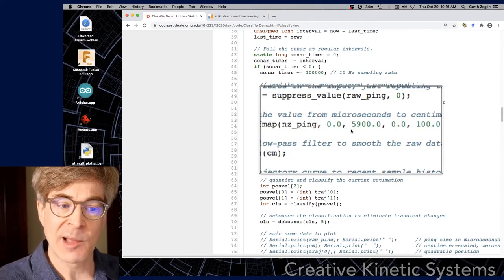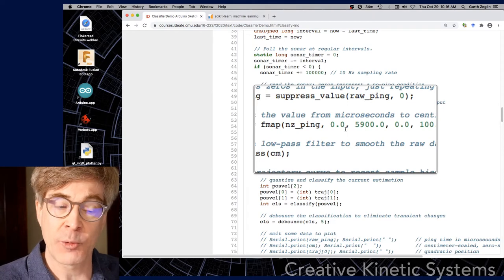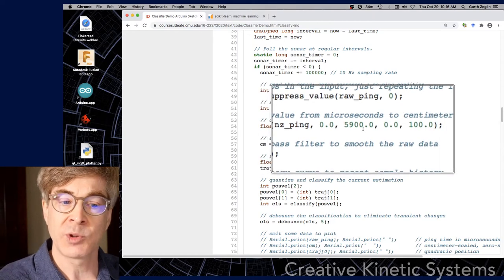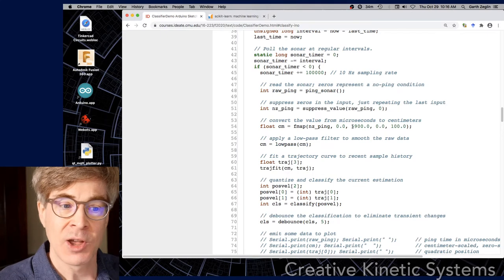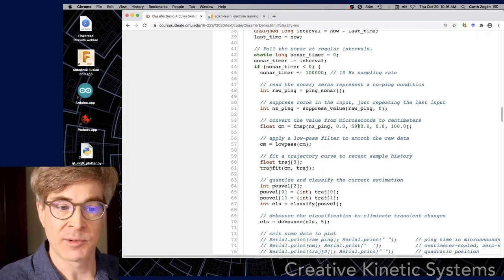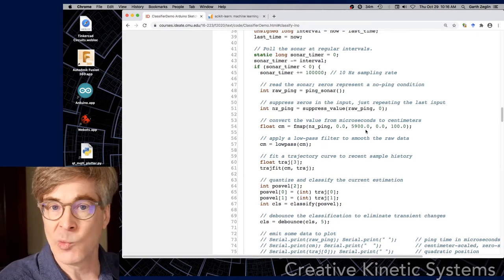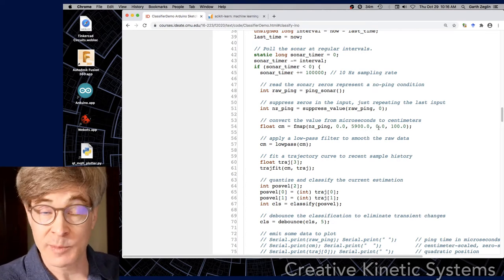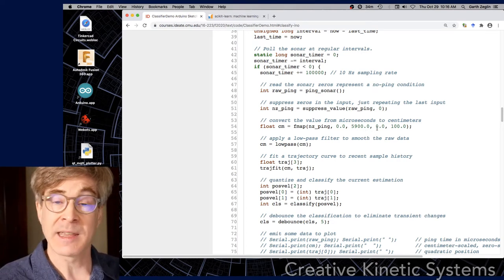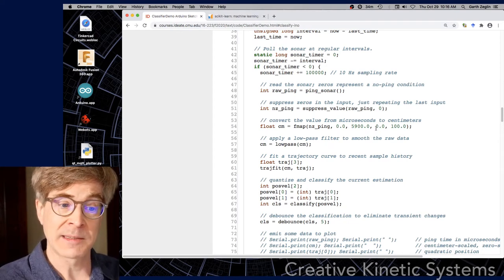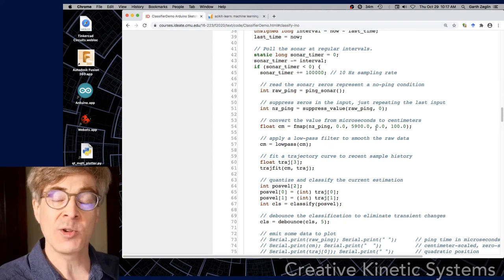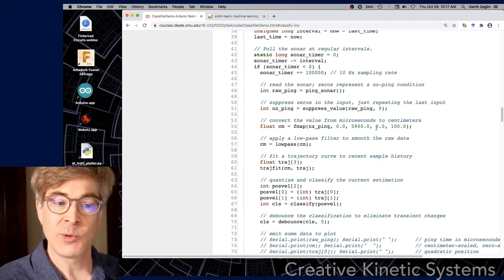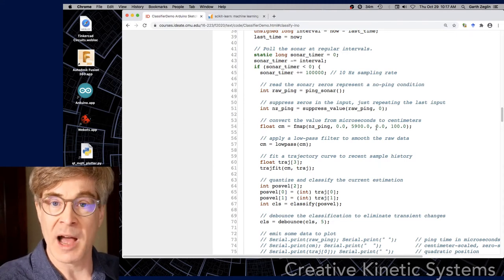That is immediately calibrated using the FMAP function from the raw microsecond round trip time to a notional value in centimeters using an assumed velocity of sound. I find it convenient to work in real world units. Building the model in centimeters means that the velocity will be in centimeters per second. It keeps things in a uniform sensor space.